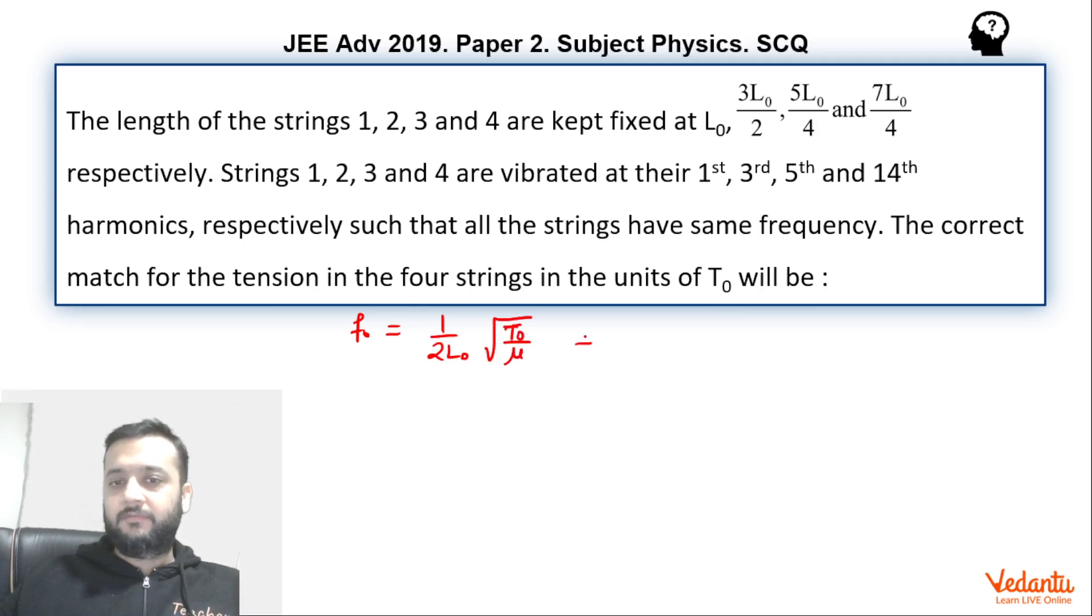The same frequency for the second string is in the third harmonic. So this will be 3 upon 2 into length, which is 3L0 by 2, into root of T2 upon 2 mu, because the linear mass density is 2 mu.